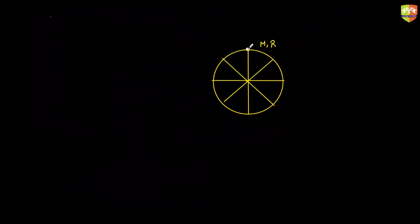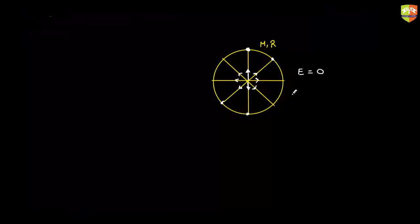You can draw lines like this. The field due to this point mass located over here will be in this direction, and due to the diametrically opposite point mass the field will be in the opposite direction. These two fields will cancel out each other. Similarly, anywhere you look, there will be a diametrically opposite point for which the field will be equal and opposite. So all these fields will cancel out and the total field will come out to be zero.